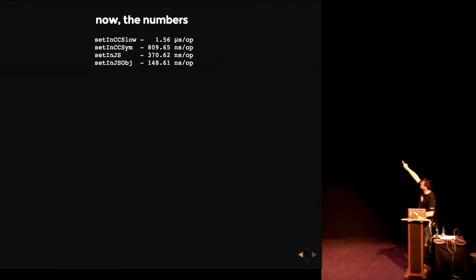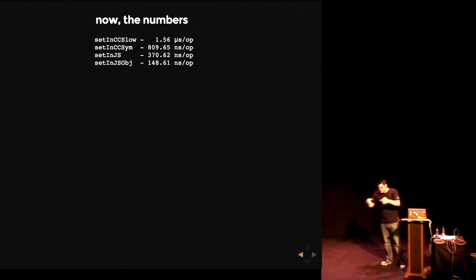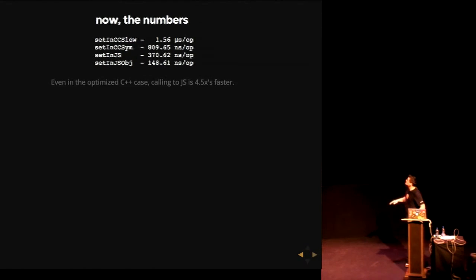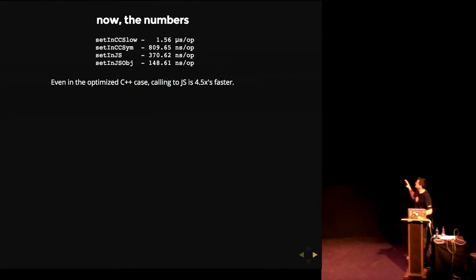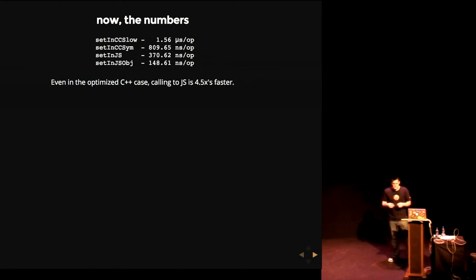A lot of people think crossing the boundary from C++ into JavaScript is going to be super expensive. Actually, setting three object properties from C++ takes approximately 800 nanoseconds. But sending those properties out to JavaScript to be set only takes 148 nanoseconds. Even the most optimal C++ case — passing everything out to JavaScript is still 4.5 times faster. In Node Core we sometimes create an array of properties and throw those out to JavaScript. You might see random functions that seem like they do absolutely nothing — they might be one of these types used simply as a performance enhancement.